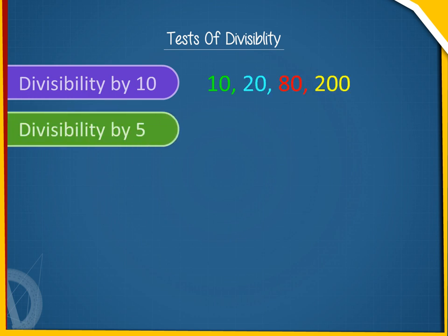2. Divisibility by 5. A number is divisible by 5 if its one's digit is either 0 or 5. For example, 25, 40, 65, 300.